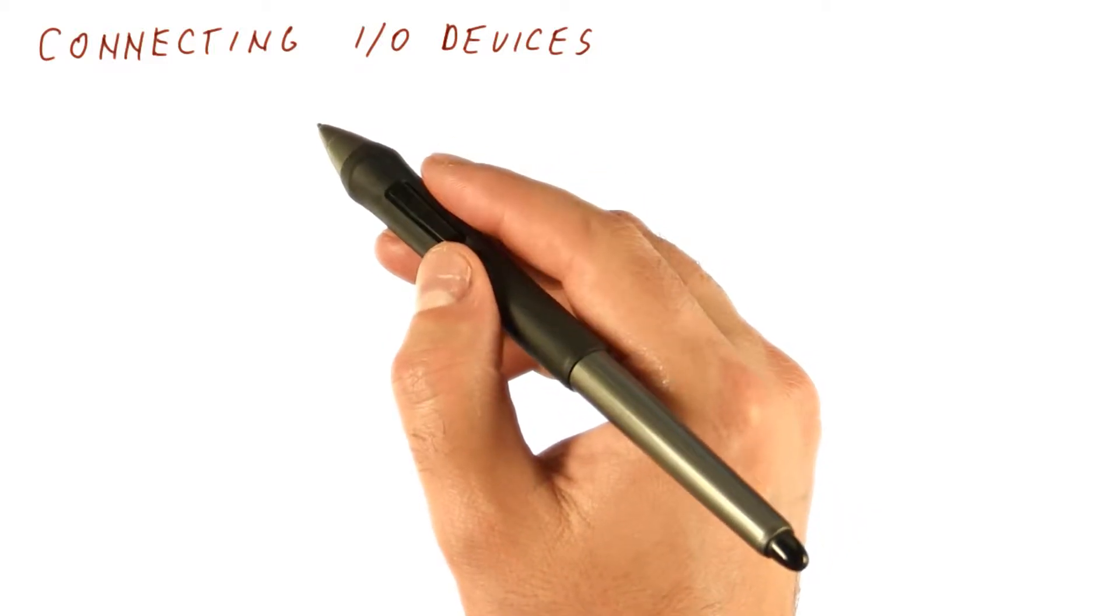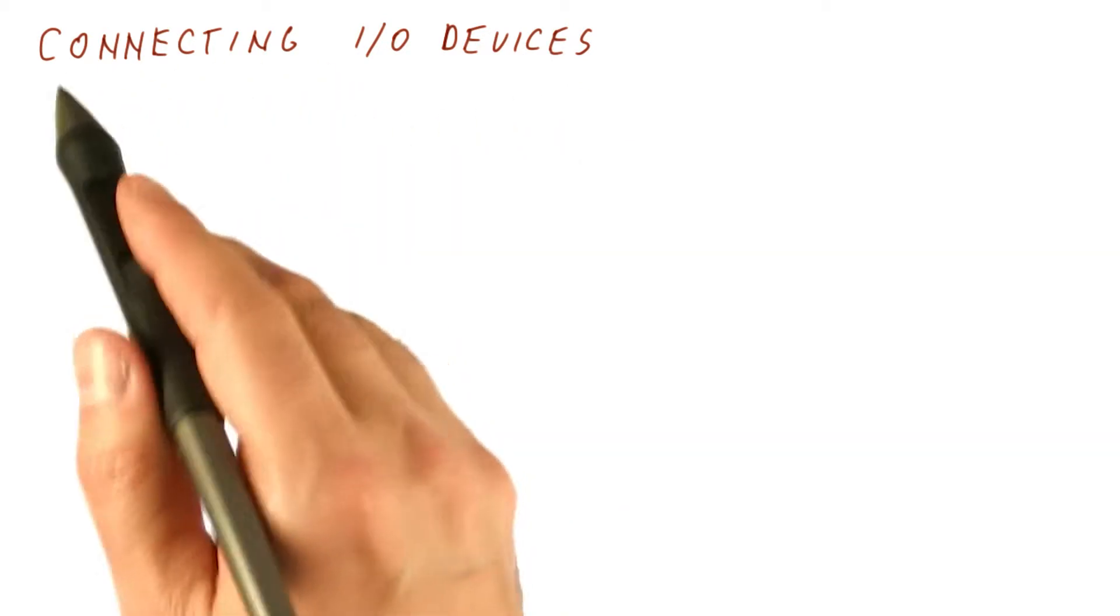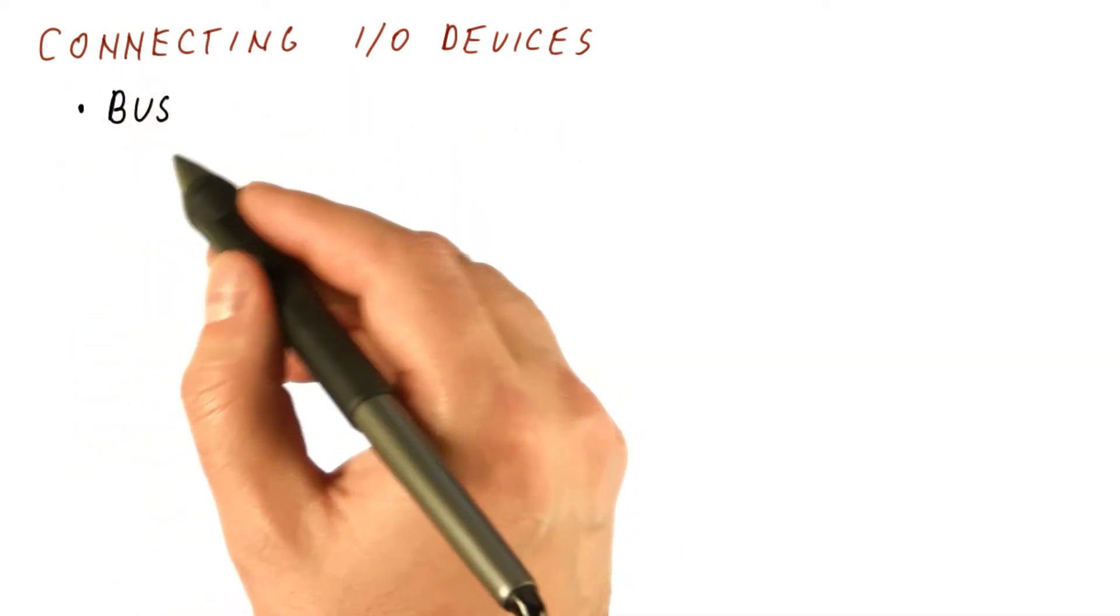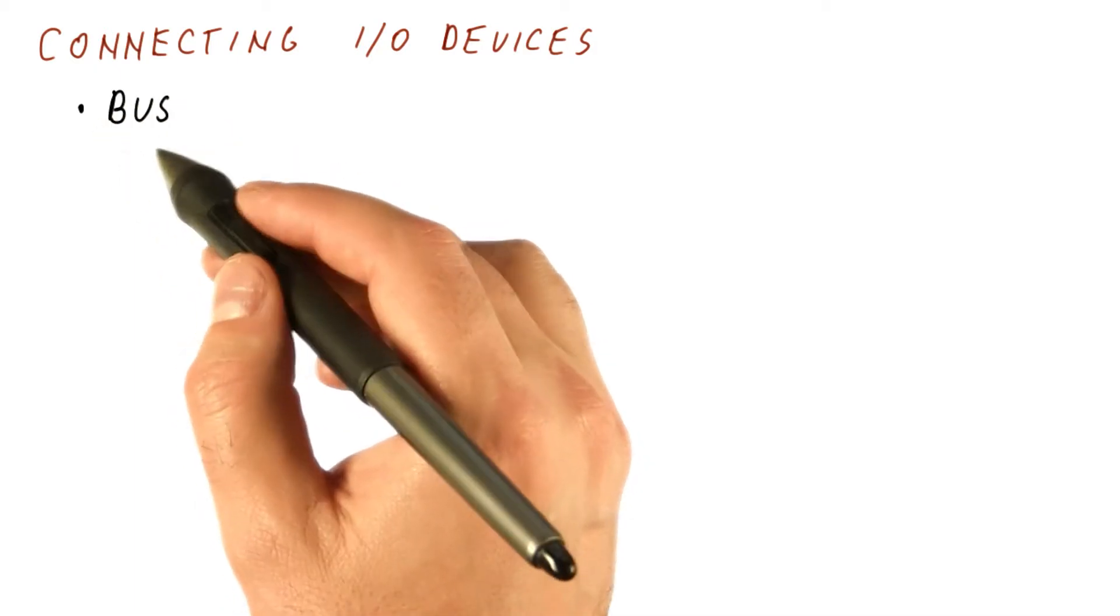Now that we have seen what storage devices look like, let's talk about how they and other I/O devices can be connected to the system. We usually connect I/O devices using some sort of standardized I/O bus.